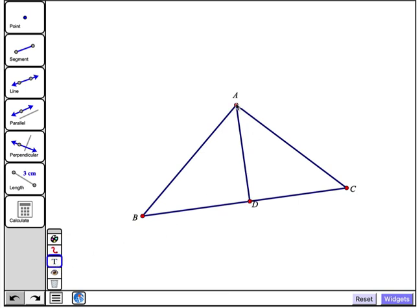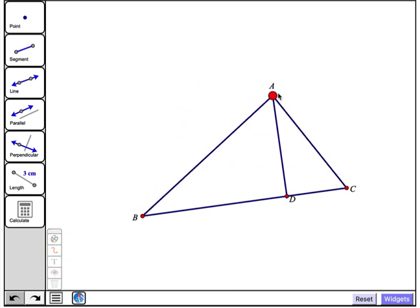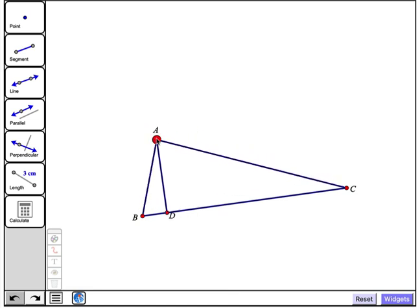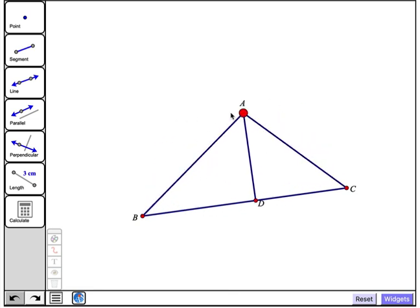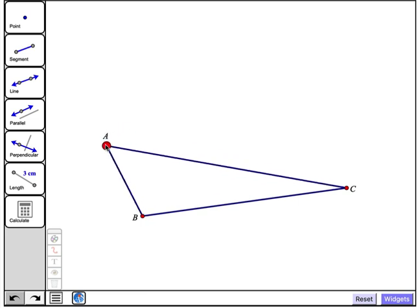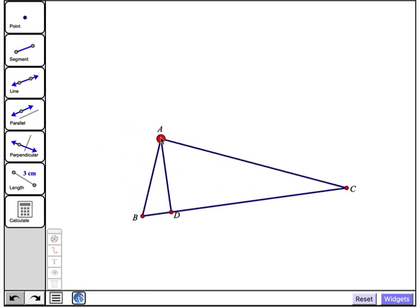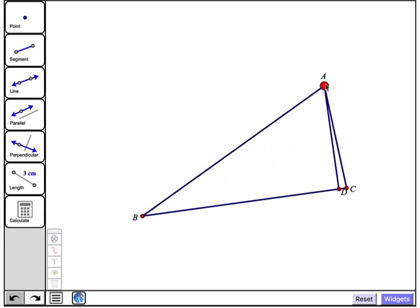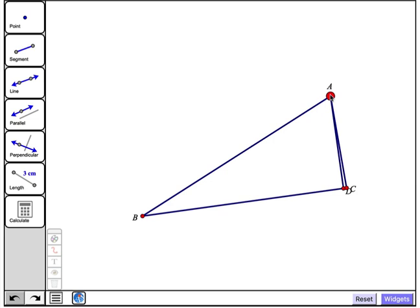All right, let's just check to make sure that our altitude is always in place when I drag the vertices of the triangle. And it's looking good, but when we get here, when the measure of angle ABC is greater than 90 degrees, that altitude no longer exists. And ditto over here.